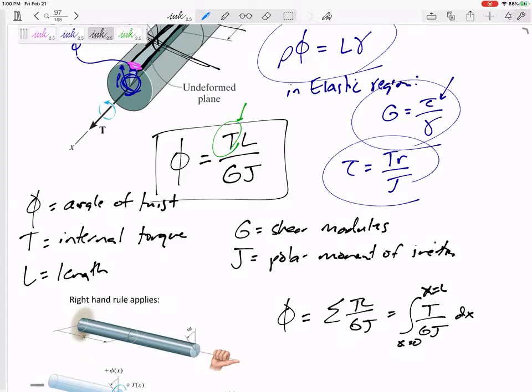It's actually only TL over GJ in the elastic region because we used the fact that G is stress over strain, and that's only true in the elastic region. Angle twist TL over GJ. Not too bad, right?